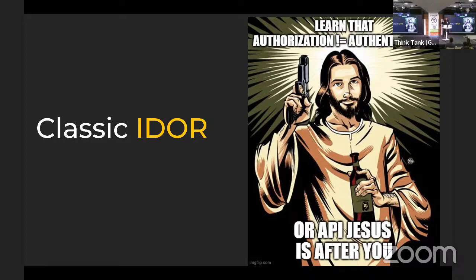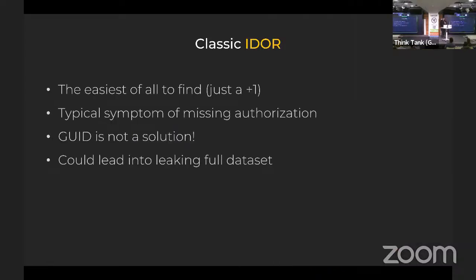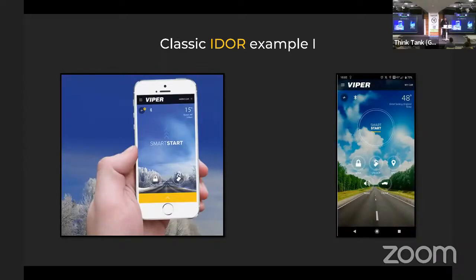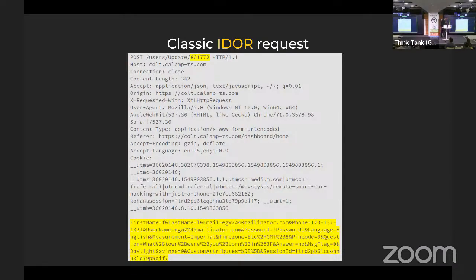IDOR stands for Insecure Direct Object Reference. It's a plus-one — the easiest of all to find. Typical symptom of missing authorization or authentication. UUID or GUID is not a solution because you can usually find the GUID and it could lead to leaking a full dataset. Example: Viper — a car alarm system. I was able to update the user with the user ID in a POST request, where you could easily deduce the ID. This usually means it's an IDOR vulnerability.